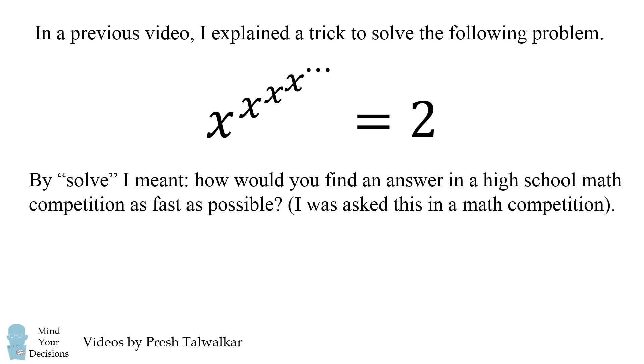Imagine you have x to the power of x to the power of x and so on repeated infinitely many times, and you want all of that to be equal to 2. How can you solve this problem? I meant how would you find an answer in a high school math competition as fast as possible. I was asked this problem in a high school math competition and the first person to get the answer got the points.